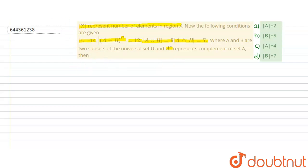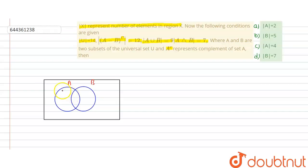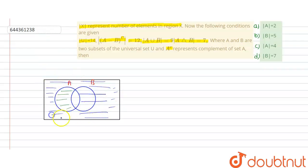First, we draw the Venn diagram. The Venn diagram contains two sets, set A and set B. In these two sets, A minus B represents only the part of A that is not in B — just that small region. The complement of A minus B is everything except that region — the full remaining region, shown as the blue region.